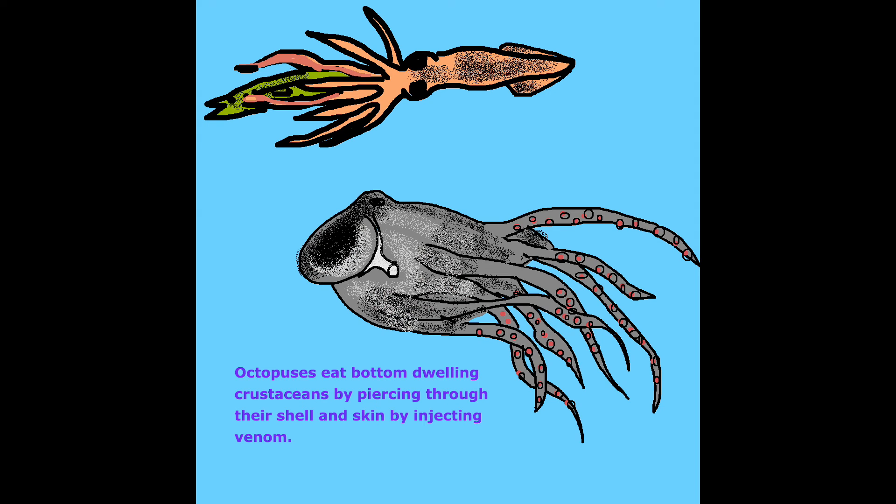Octopuses eat bottom-dwelling crustaceans by piercing through their shell and skin and injecting venom. Squids eat small fish by grabbing them with their two long tentacles.